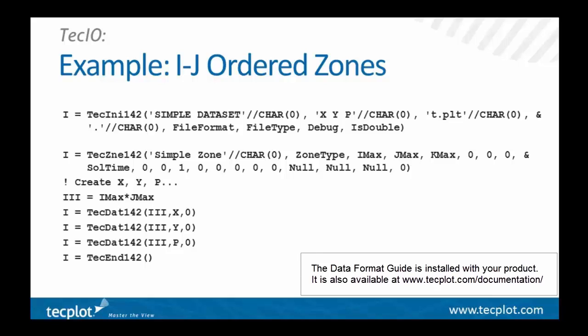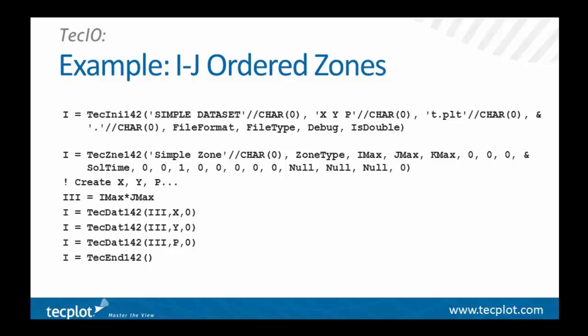The Data Format Guide discusses not only the formats of our data but all of the TechIO APIs as well. Then finally we call TechDAT telling it how many values, and as you can see, we're just dumping our X, Y, and P arrays all in at once with three calls. We don't have any connectivity with an ORDERED zone so we don't call TechNODE, and we close the file with TechEND.